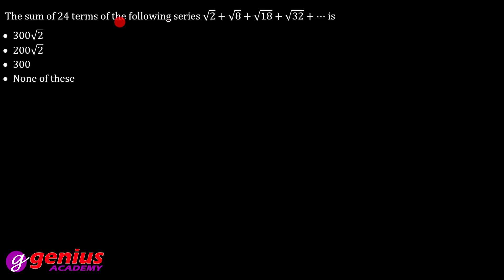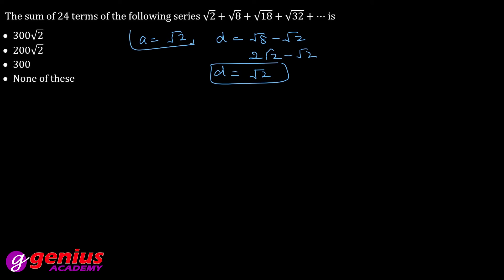Last question: find the sum of 24 terms of the series. The first term a = √2, and the common difference d = √8 − √2 = 2√2 − √2 = √2. So d = √2. The formula for Sn is (n/2)(2a + (n−1)d).